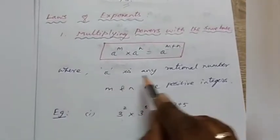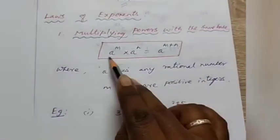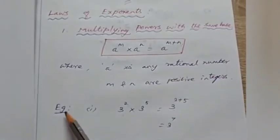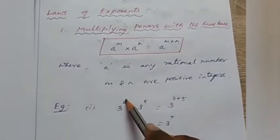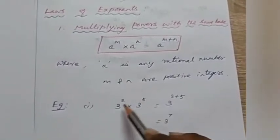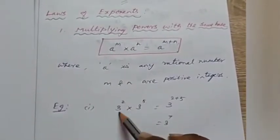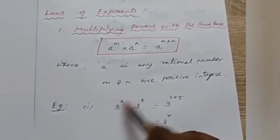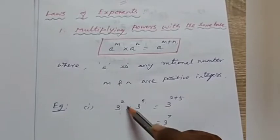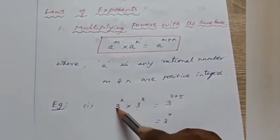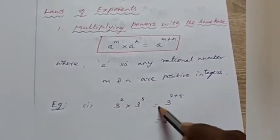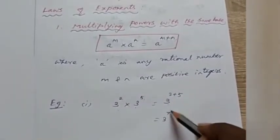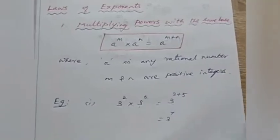Here, a is any rational number and m and n are positive integers. For example, 3 power 2 into 3 power 5 — the bases are the same, so we add the powers: 3 power 2 plus 5. Since 2 plus 5 equals 7, the answer is 3 power 7.